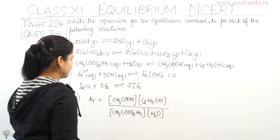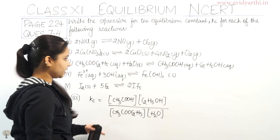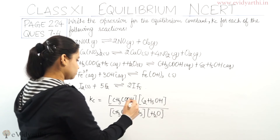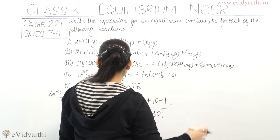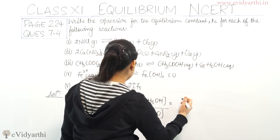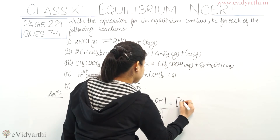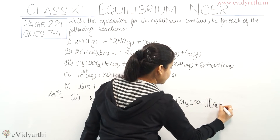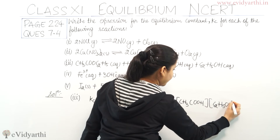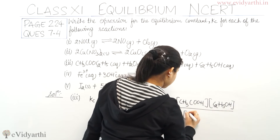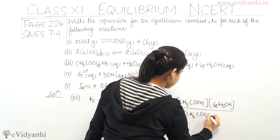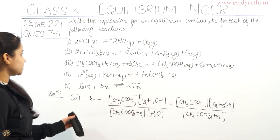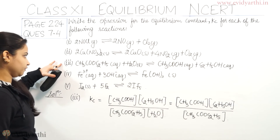I also want to tell you, for this part of the question, that the concentration of water is always unity. So the equilibrium constant for this part of the equation simplifies to [CH₃COOH] × [C₂H₅OH] divided by [CH₃COOC₂H₅]. This is the equilibrium constant for the third part of the equation.